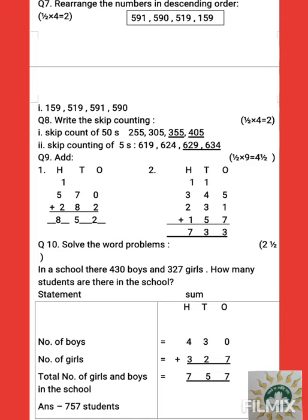Question number nine: add. Children, you can see there are two sets of sums you need to add, and please do not forget to mention the carry forward if it is there. In the first sum the number is 570 and the number to be added is 282. Start from ones place: 0 added to 2 you get 2. 8 plus 7 is 15, so 5 is the number you'll write down and 1 will be carried forward to hundreds place. 5 plus 2 is 7, plus 1 is 8.